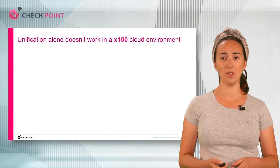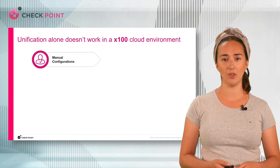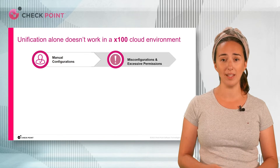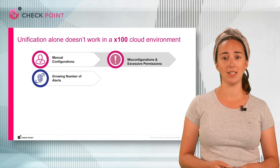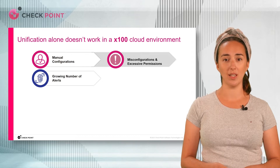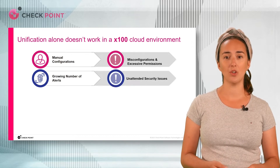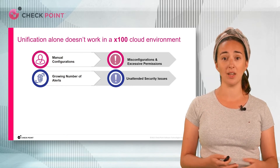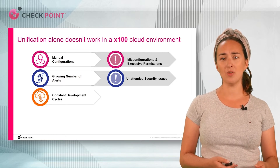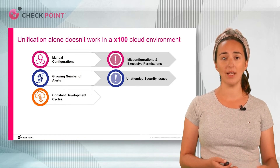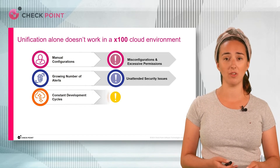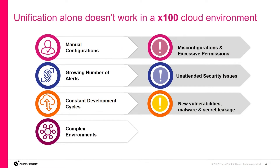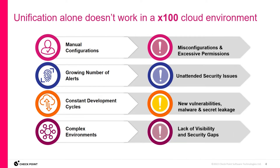Let's take a closer look at some of those specific challenges. Even with a unified approach to security, manual configurations of cloud resources mean there are regularly risks associated with misconfigurations and excessive permissions. With the growing number of security alerts as the cloud environment continues to grow and mature, security teams don't have the tools to prioritize alerts based on their business impact, leading to inevitable human oversight and unattended security issues. The speed of DevOps means new vulnerabilities and risks like secret leakage or malware are regularly discovered, and there's also an inevitable lack of visibility because the pace of change is so fast.